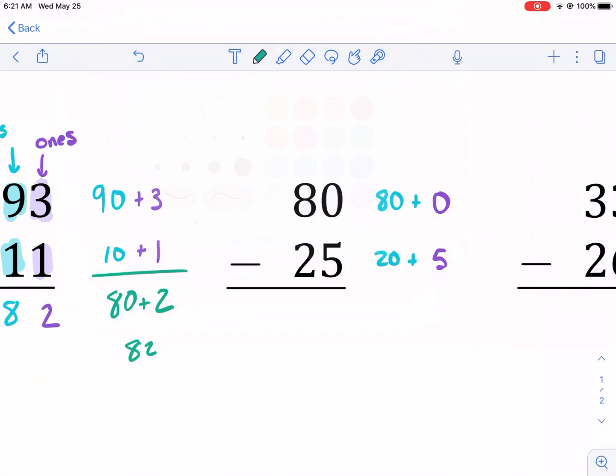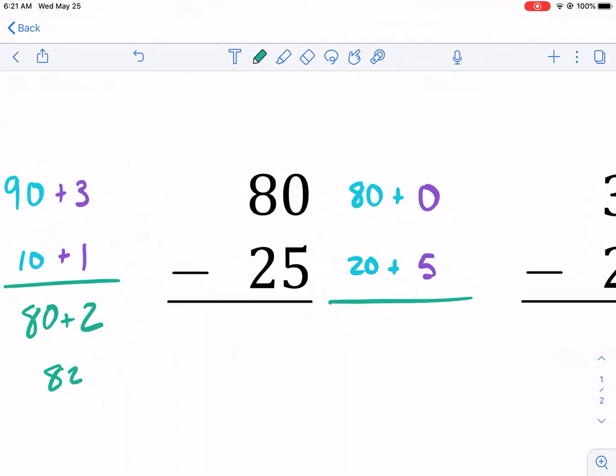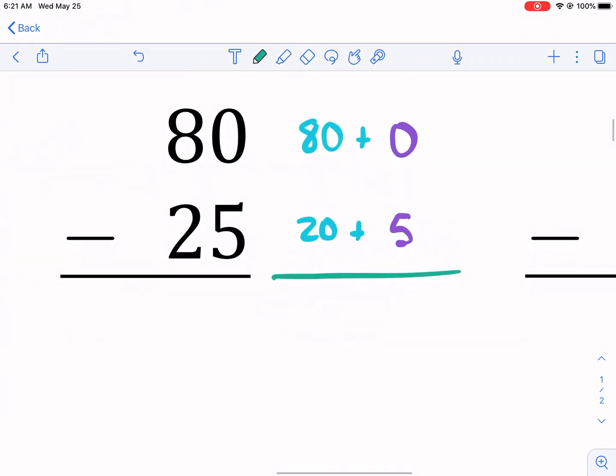Here's the thing. The subtraction, here's green. I said I wasn't, and here I am. So if we do 80 minus 20, that's easy. We get 60, but we can't do 0 minus 5. So what happens?